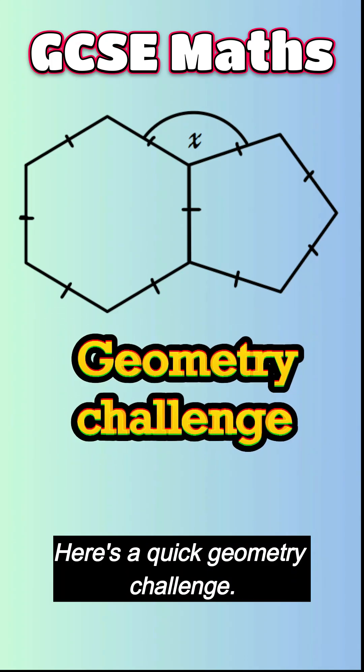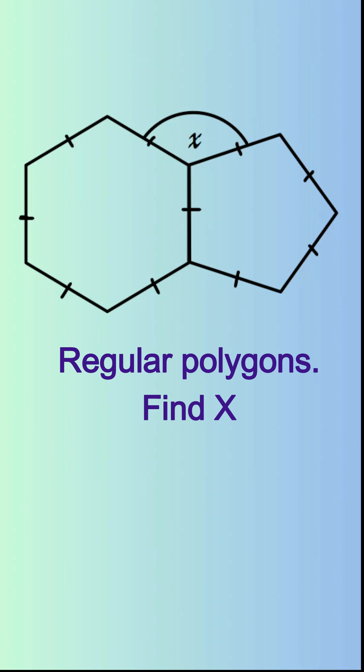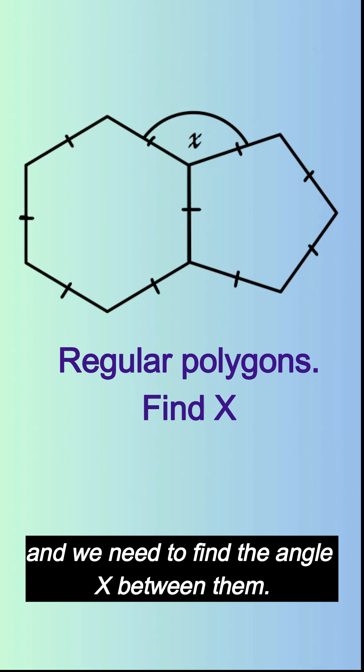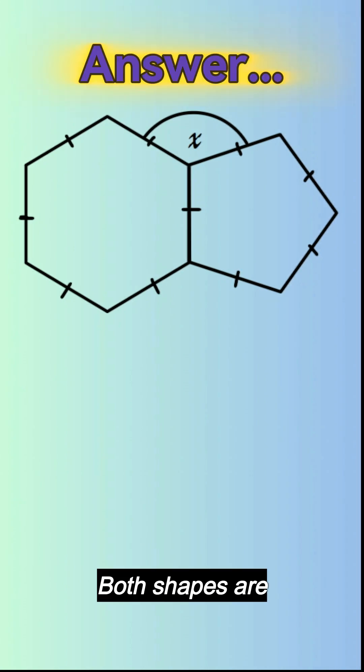Here's a quick geometry challenge. These two shapes share equal sides and we need to find the angle x between them. Pause now and see if you can work it out. Okay, let's do this. Both shapes are regular polygons.